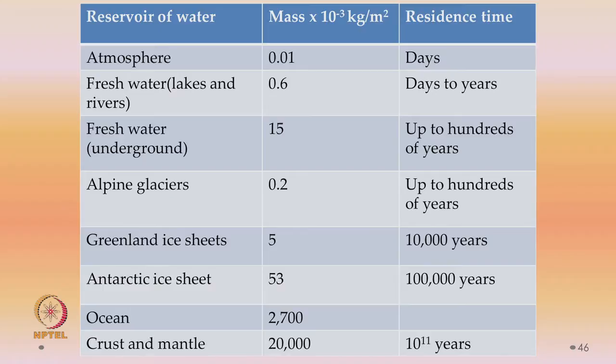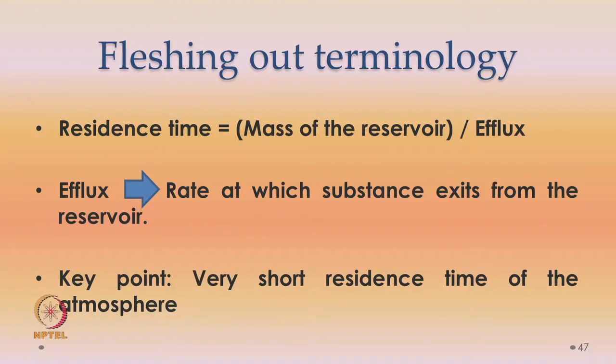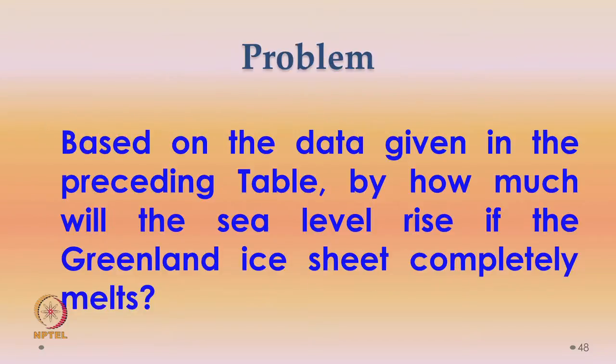We already looked at this in yesterday's class. The atmosphere has got a mass of 0.01 times 10 to the power of 3 kilogram per meter cube. We looked at the residence time. These are the basic reservoirs of water. We looked at residence time, which is the mass of the reservoir divided by efflux. Efflux is the rate at which the substance, that is water or water vapor, exits from the reservoir. Key point is a very short residence time of the atmosphere, which is the order of days. The mantle is about 10 to the power of 11 years.